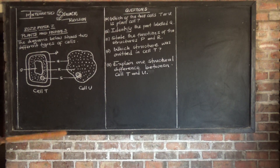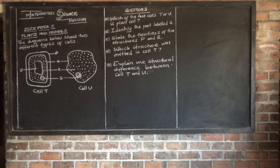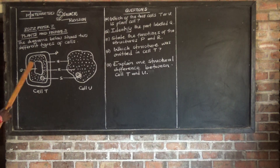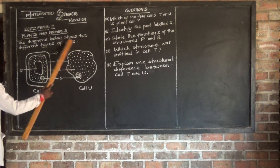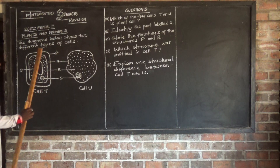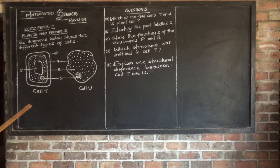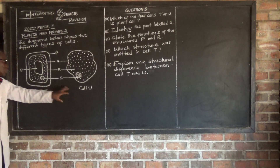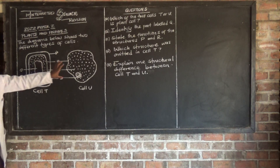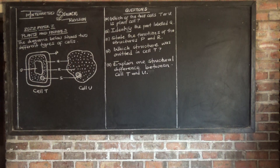Let's proceed, looking at 2022 paper 2. The question is based on plants and animals. Now specifically we are looking at cells. The diagrams below show two different types of cells. So these cells are Cell T and Cell U.